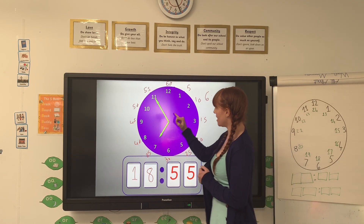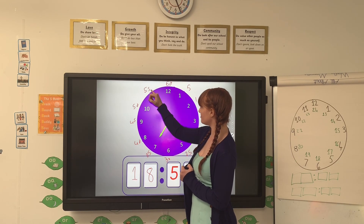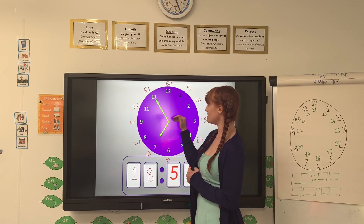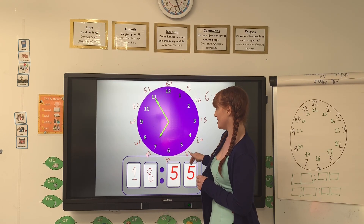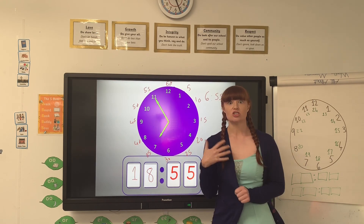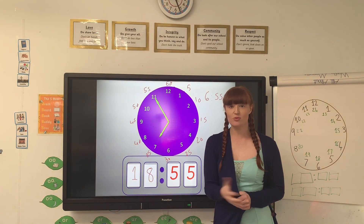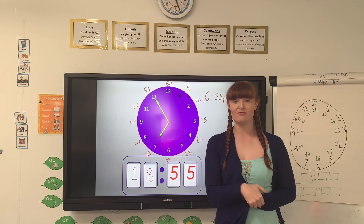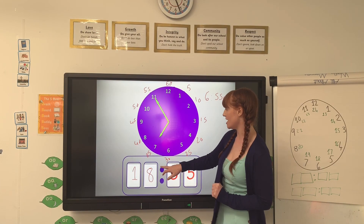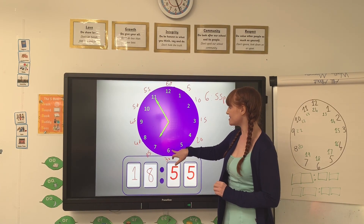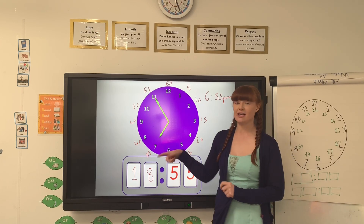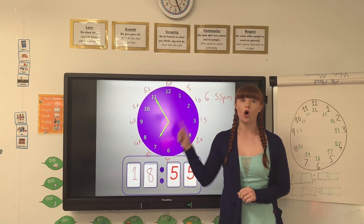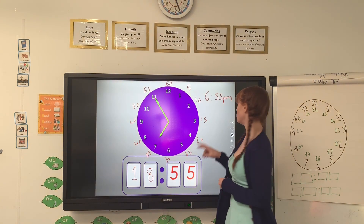So you can see here that it's 55 minutes. We wouldn't say it's 55 minutes to 7, and we wouldn't say it's 55 minutes past 7 because it's not past the 7 yet — it's past the 6. So that is showing 55 minutes past 6 on a digital clock.